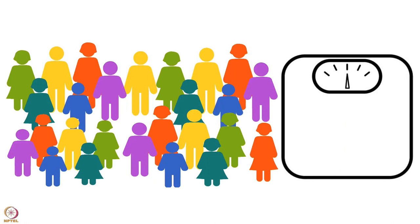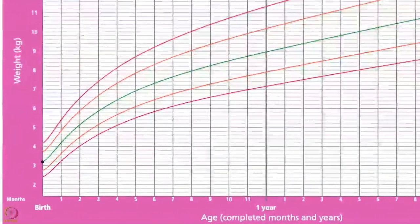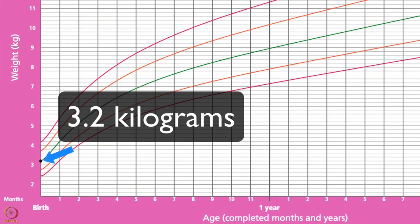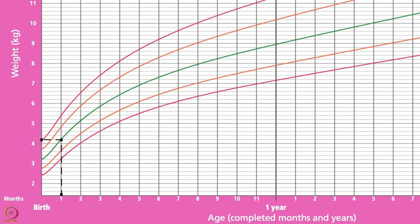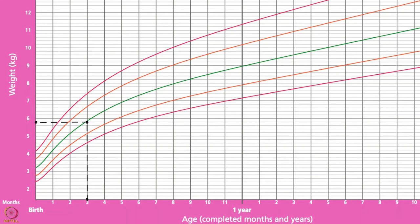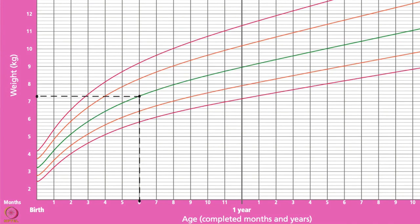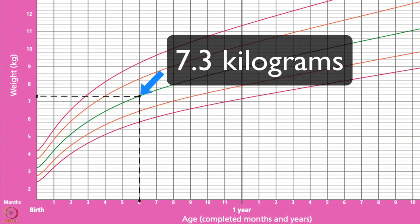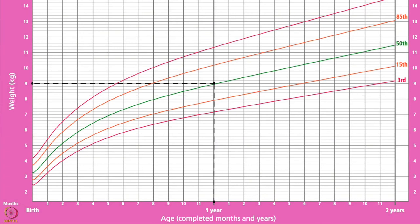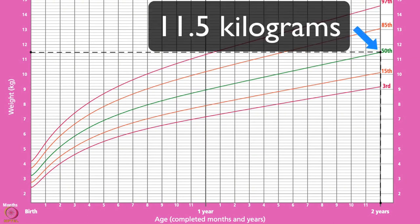Let's learn more about the average weight of a child, which lies along the 50th percentile line. The average birth weight of a girl is 3.2 kgs. At 1 month, a girl's average weight is 4.2 kgs. At 3 months, it is 5.8 kgs. The average weight of a 6-month-old girl is 7.3 kgs. At 1 year, it is 9 kgs. At 2 years, it is 11.5 kgs.